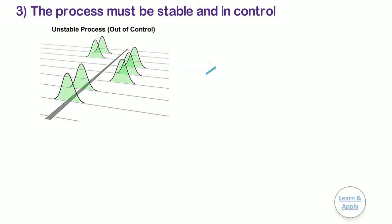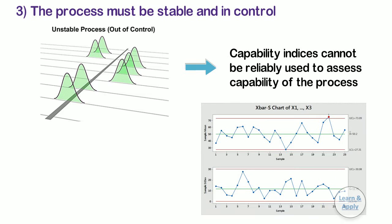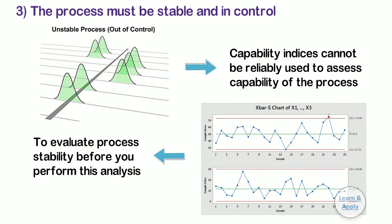Third, the process must be stable and in control. If the current process is not stable, then the capability indices cannot be reliably used to assess the future and ongoing capability of the process. If you are not sure whether your process is in control, use X bar R chart to evaluate the process stability before you perform this analysis.